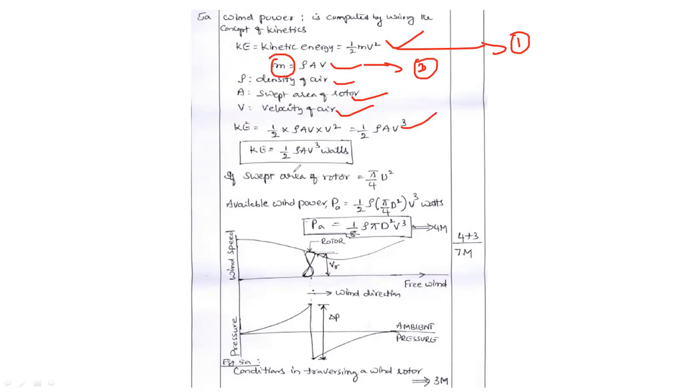So K is equal to half rho av cube. Then swept area of the rotor: pi d square, pi by 4 d square. Then available power is equal to half rho av cube. Here A you can substitute as pi by 4 d square. Then ultimately you will be getting 1 by 8 rho pi d square v cube. This is actually the total power which is available. Also you can explain with the help of this particular diagram.